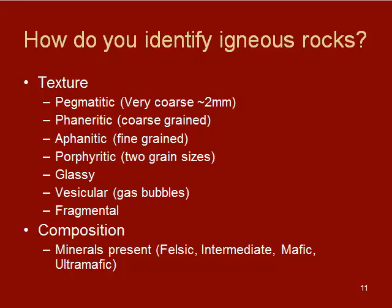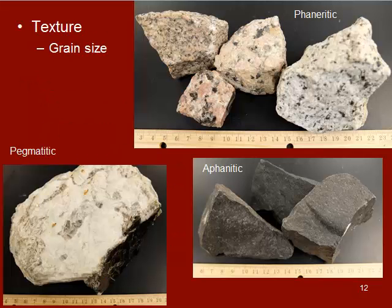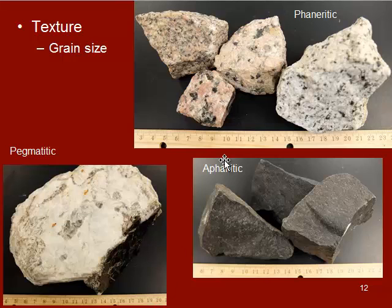Let's see what these look like. Texture refers to grain size. Pegmatitic — your grains are really, really large, as you can see from the scale on the bottom. Phaneritic — grains are pretty big; you can see the minerals with the naked eye. Aphanitic — very fine; you cannot actually see the minerals with the naked eye.